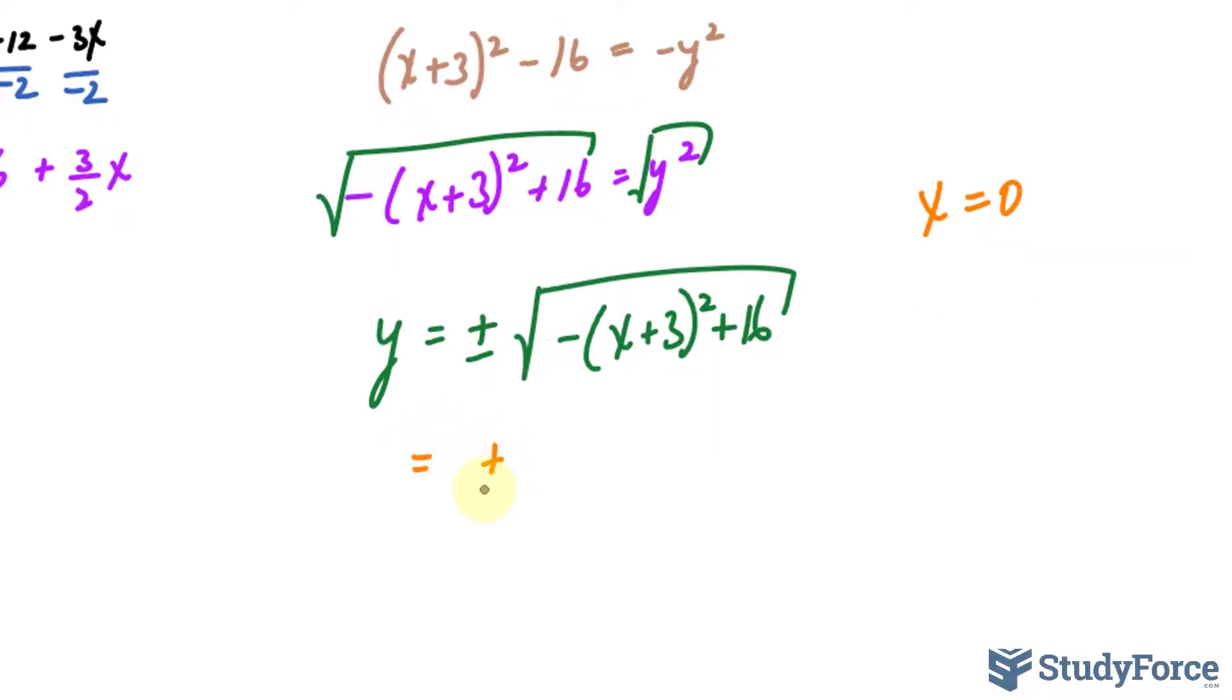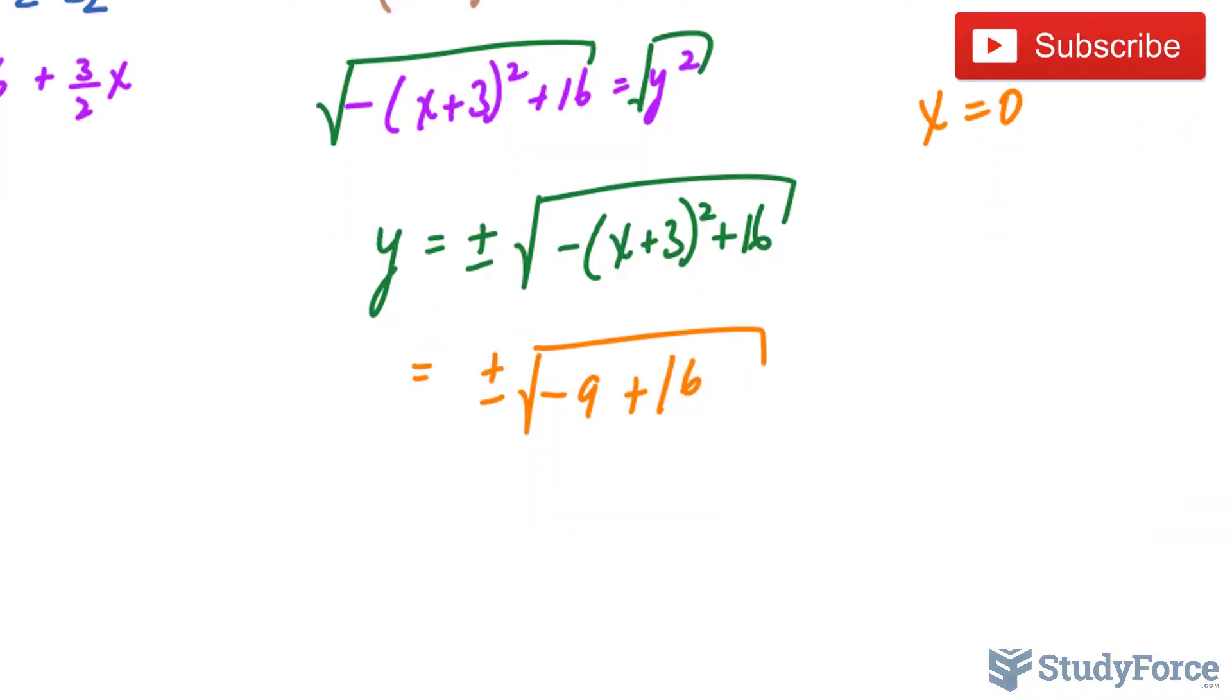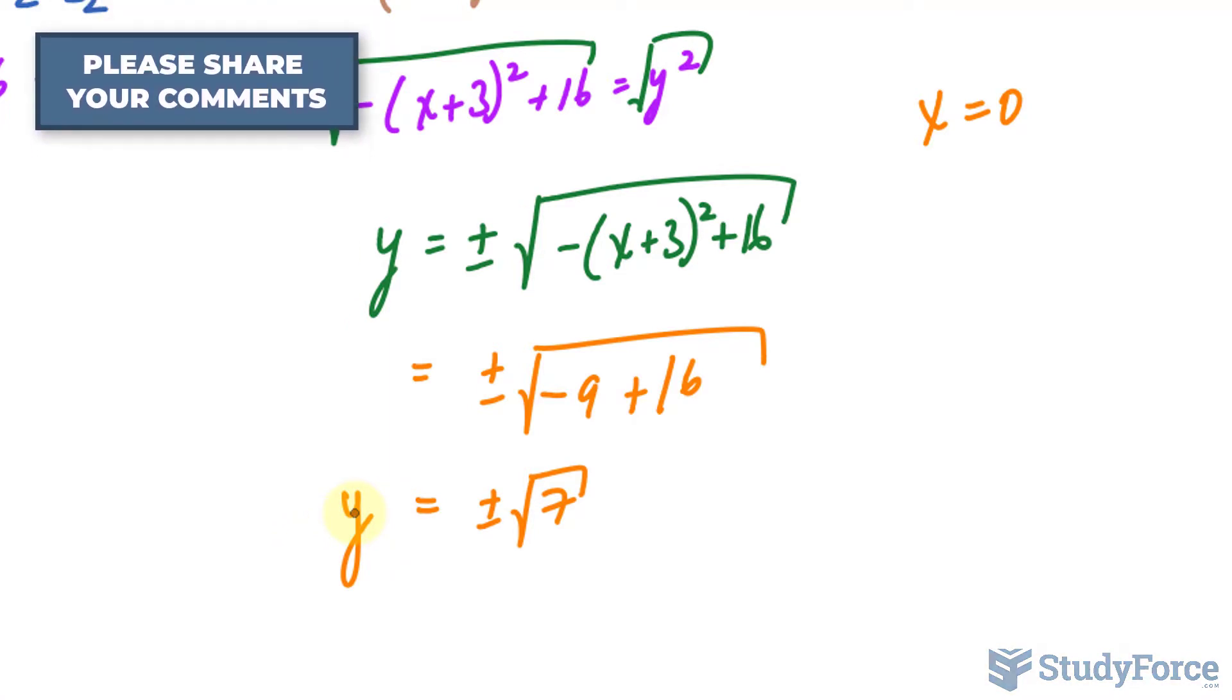I would get plus or minus: 0 plus 3 is 3 raised to the power of 2 is 9, negative 9 plus 16. Negative 9 plus 16 is 7. So I have plus or minus the square root of 7. Like I said, if I take the square root of 7, I'm going to get a plus or minus version. So I'll get two y outputs for a single x input, and that doesn't qualify it as a function.